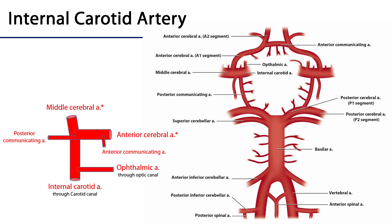Next we have the internal carotid artery. That internal carotid artery does nothing in the neck — it ascends straight up to the base of the cranium where it enters through the carotid canal of the temporal bone. It will jog for a little while, pop up on either side of the sella turcica, and its first branch moving anteriorly is the ophthalmic artery, which supplies the orbit, the eye, and the forehead with blood, running through the optic canal of the sphenoid bone.